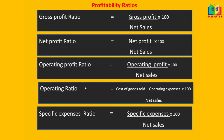There is a relationship between operating profit ratio and operating ratio — if we add the two ratios, we will get 100%. You will understand this while doing the problem. Specific expenses ratio is specific expenses divided by net sales into 100. This applies when any specific expense is given in the problem — it may be administrative expenses, selling and distribution expenses, or financial expenses — whatever the expense, divide it by net sales into 100.